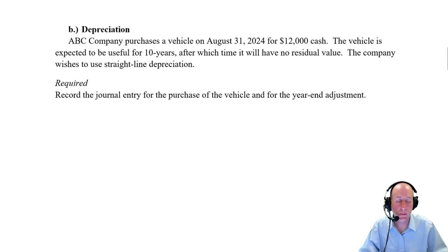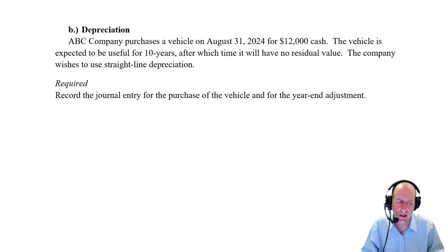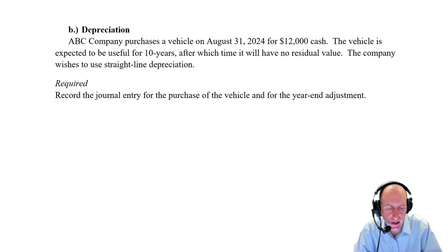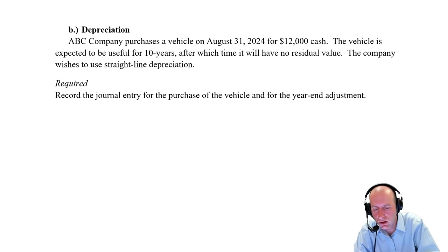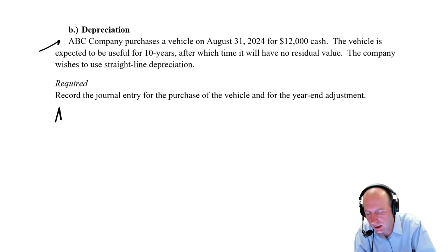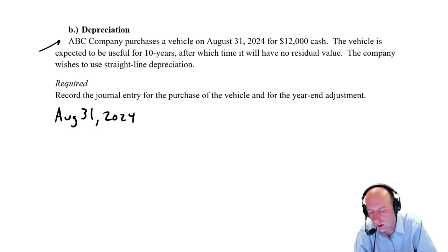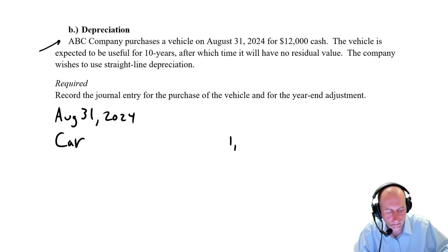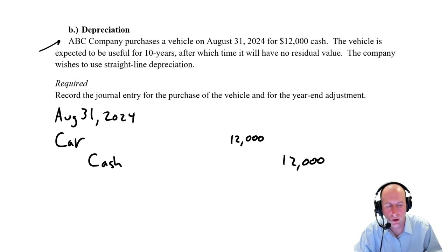Part B is a depreciation entry. This is where we buy a longer-term asset and record its loss in value due to usage, wear and tear, or age. ABC Company purchased a vehicle on August 31st, 2024 for $12,000 cash. On that date — not an adjusting journal entry, just a normal transaction — we debit vehicle $12,000 and credit cash $12,000.